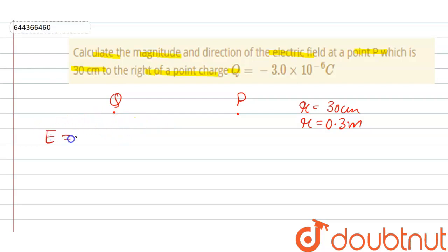E = kQ/r², that means 9 × 10^9 × Q. Q is 3 × 10^-6 upon r²